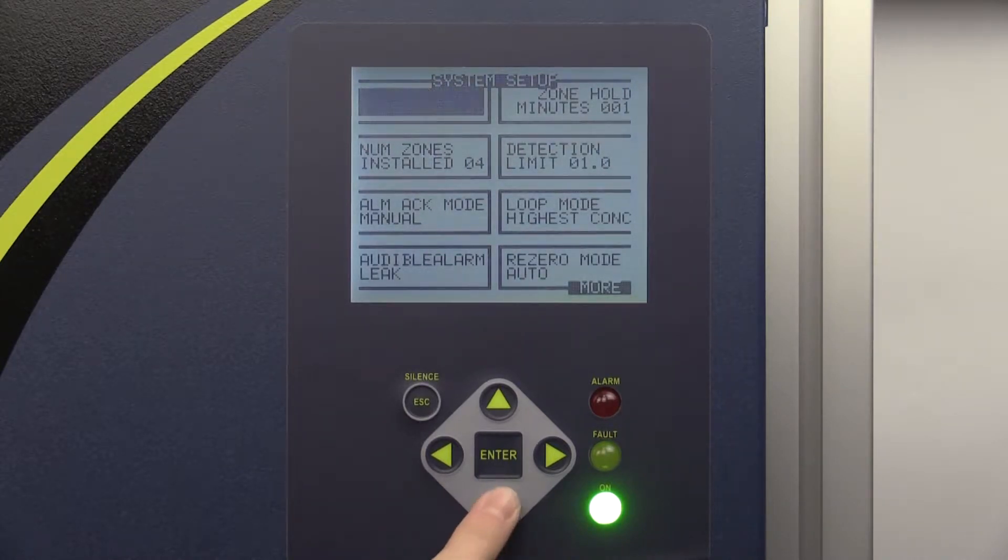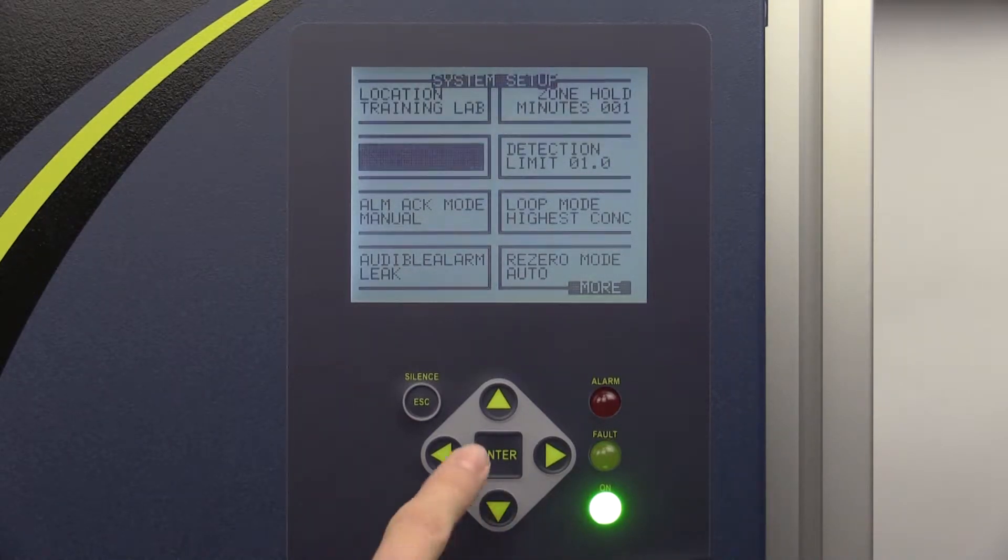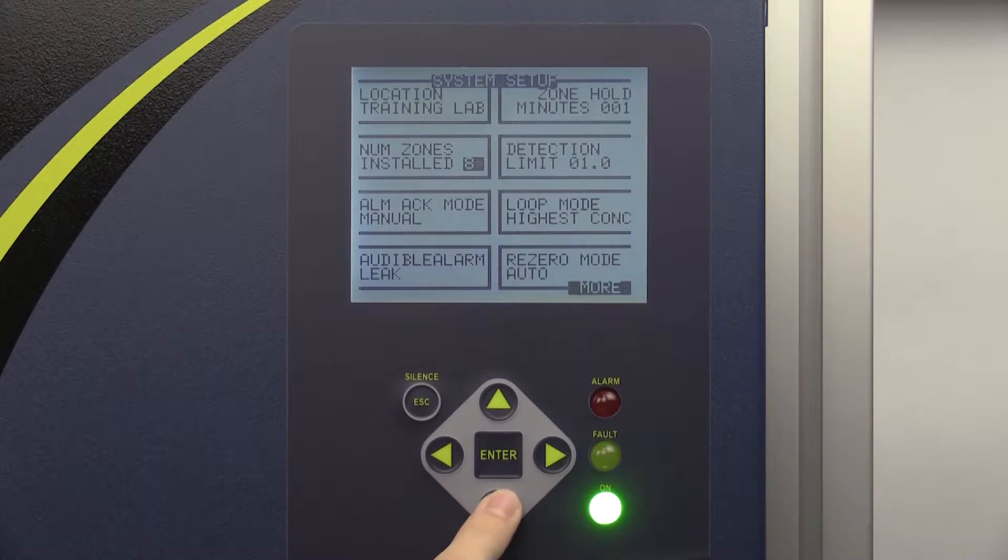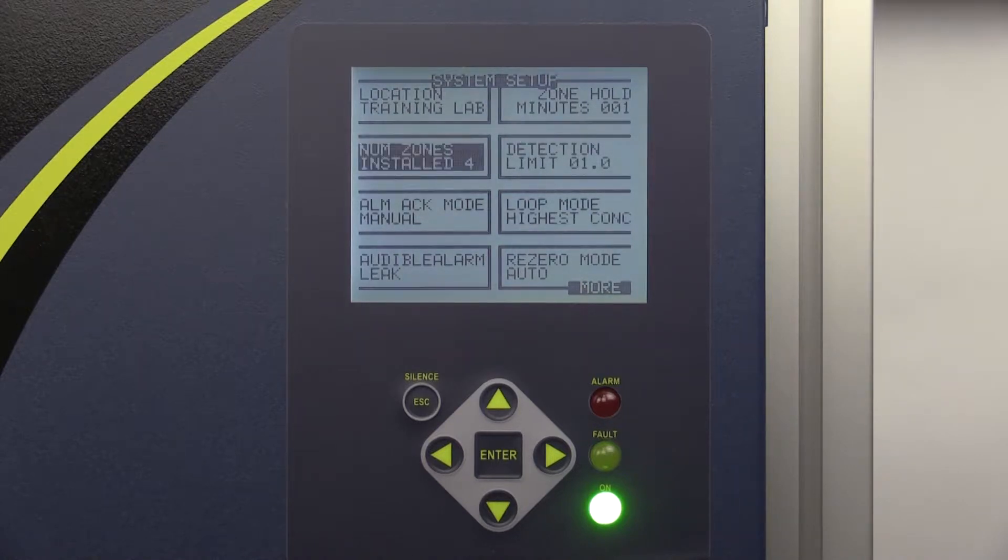The number of zones installed tab should indicate the number of manifolds connected to the side of the monitor. This number can be changed by highlighting the number of zones installed tab, pressing enter and using the up and down arrows to edit the number. If the number of manifolds you have installed is not a multiple of 4, round up to the nearest multiple of 4 and enter this number into the box. We can correct for any unused ports later when setting the length of tubing for each port on the zone setup screen.